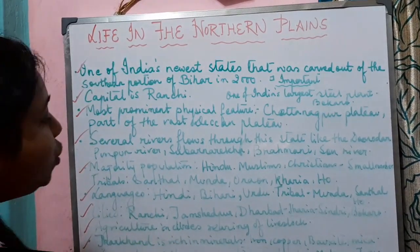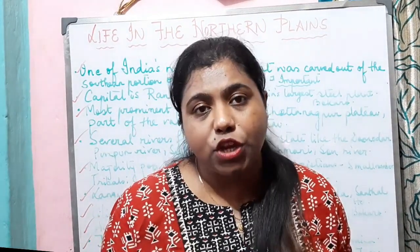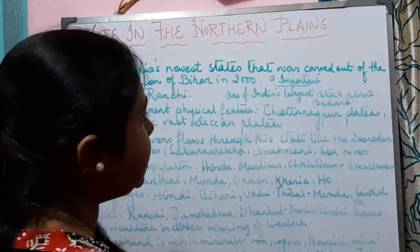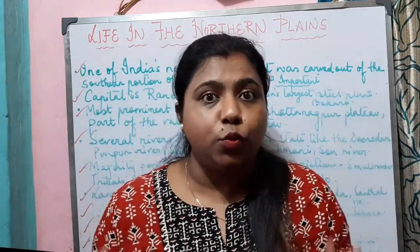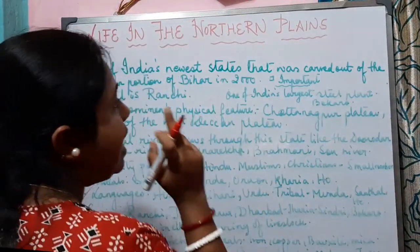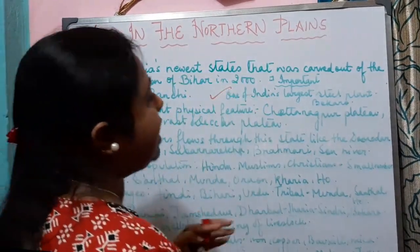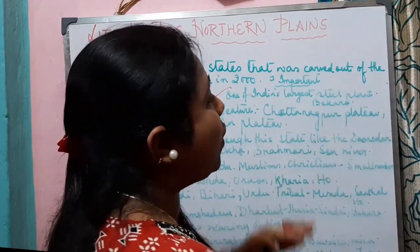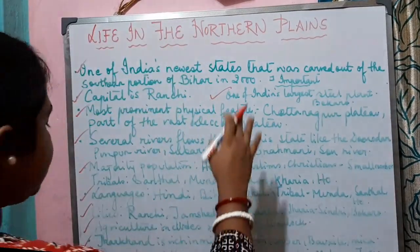The Damodar Valley Corporation provides water for irrigation and hydroelectricity. One important fact to remember about Jharkhand is that one of India's largest steel plants is located at Bokaro.